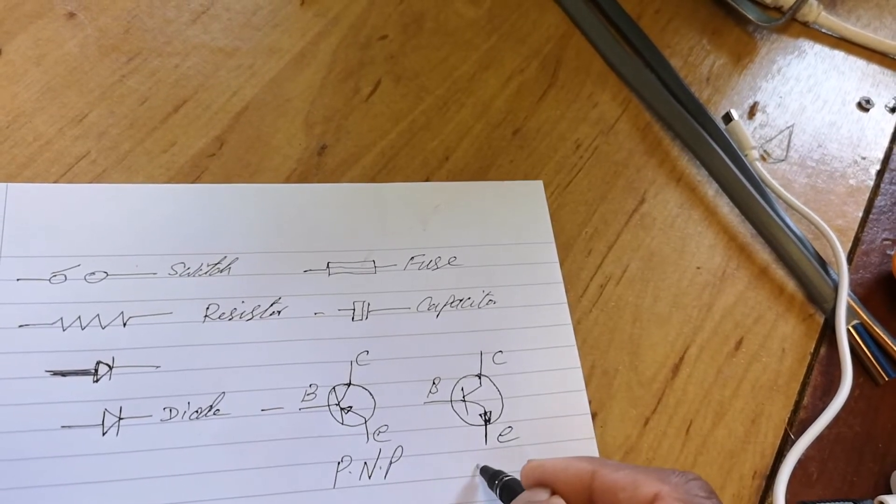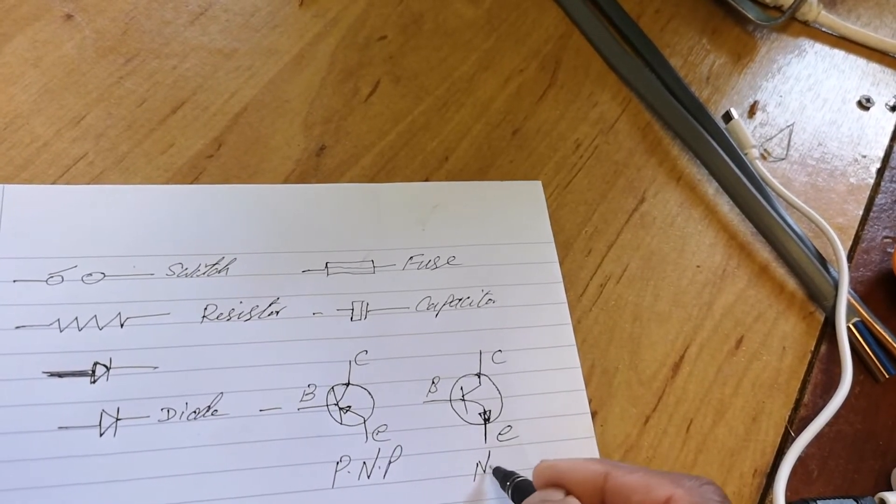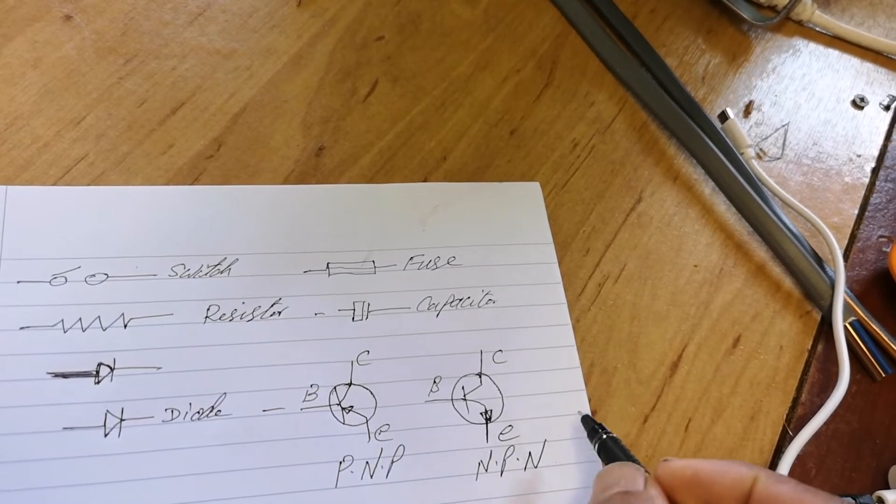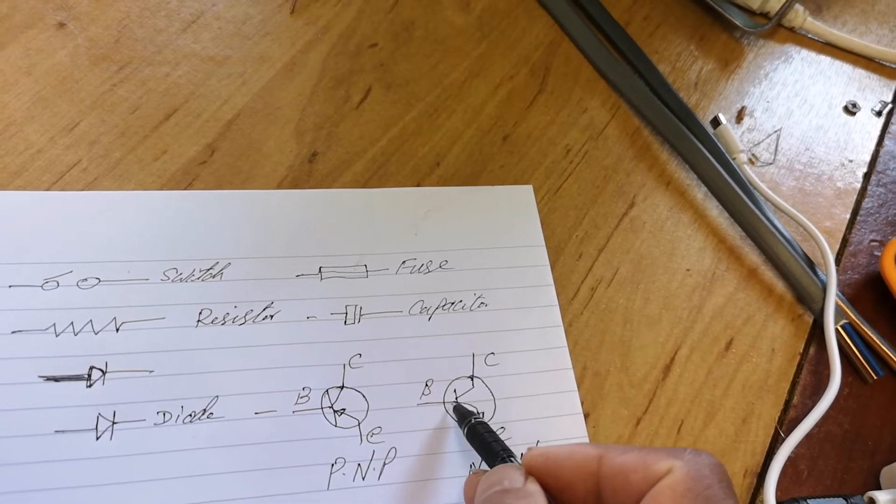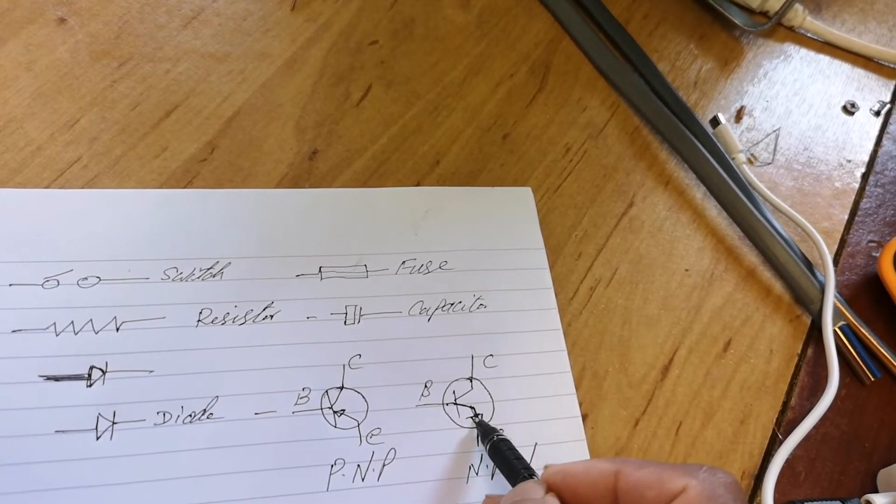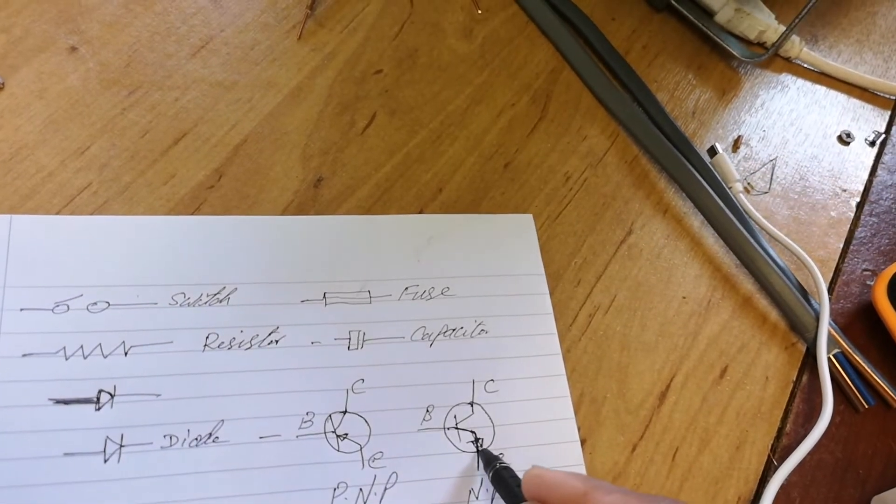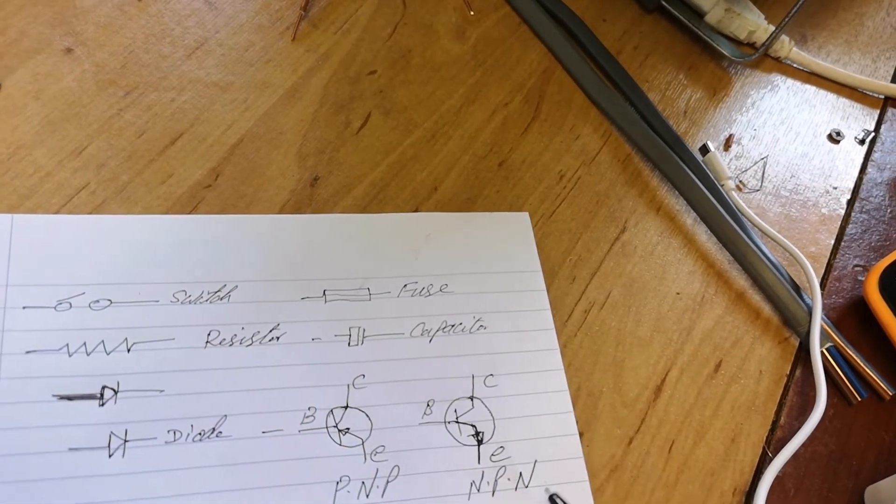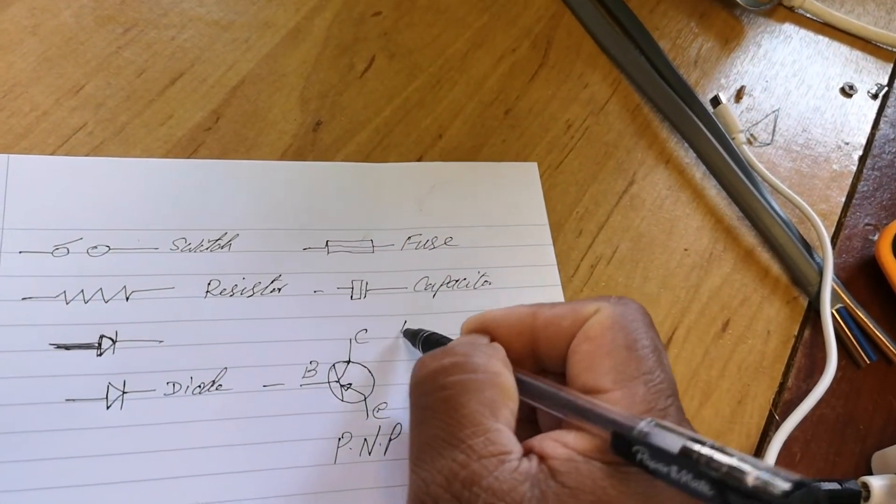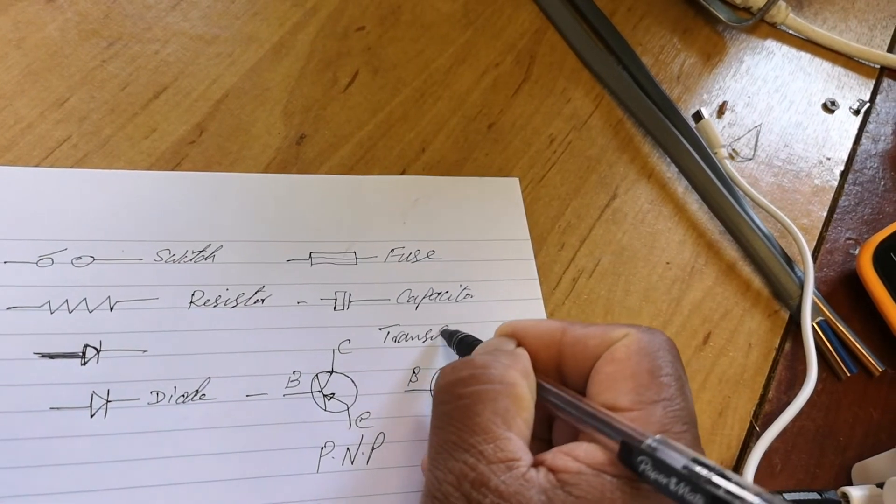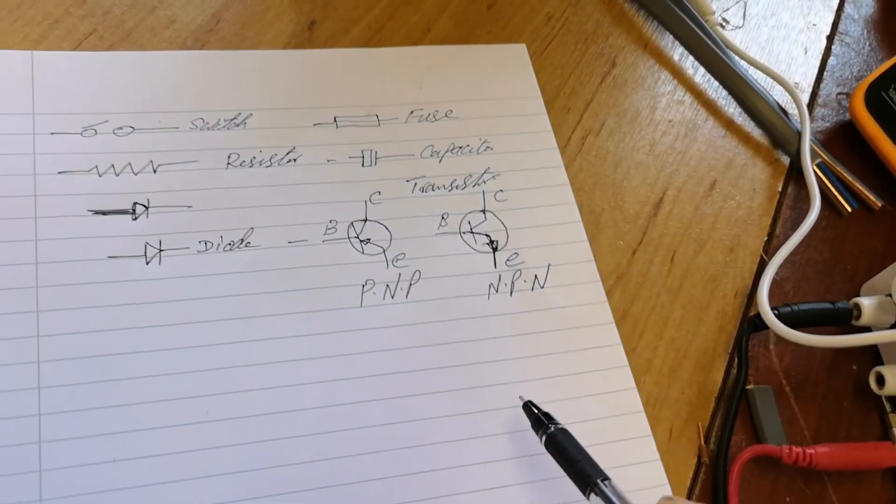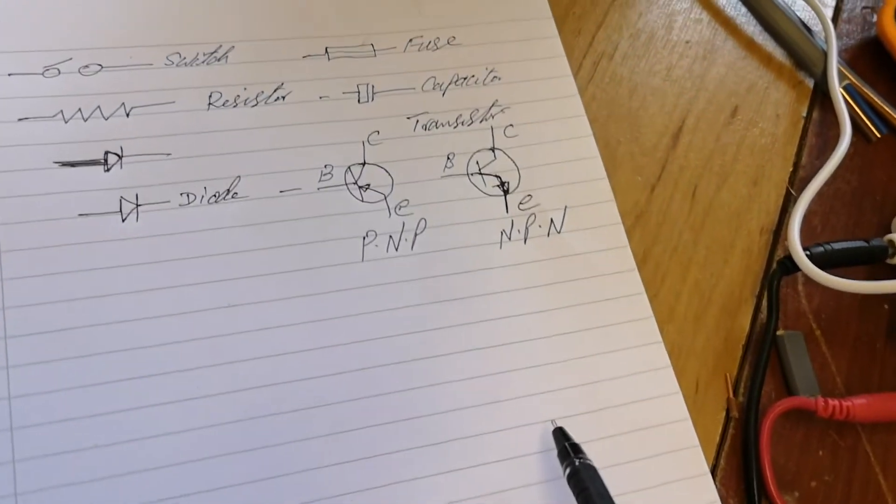So this is NPN. So this is negative going out, you see, of the NPN. This is a transistor. Transistors. Okay.